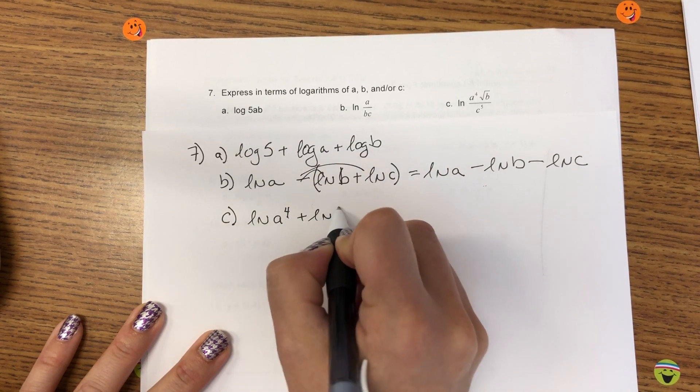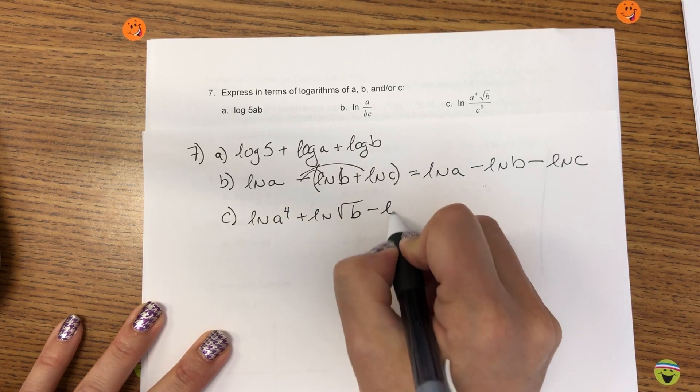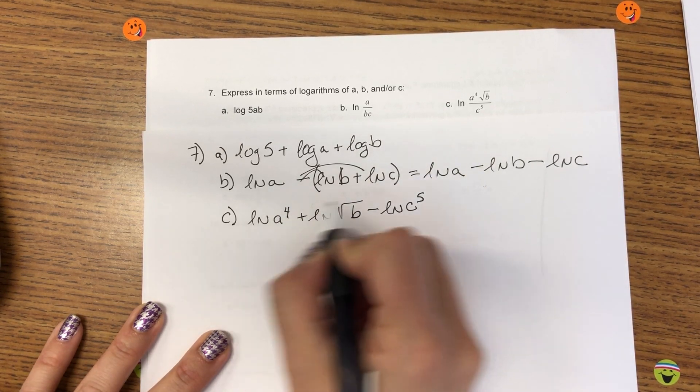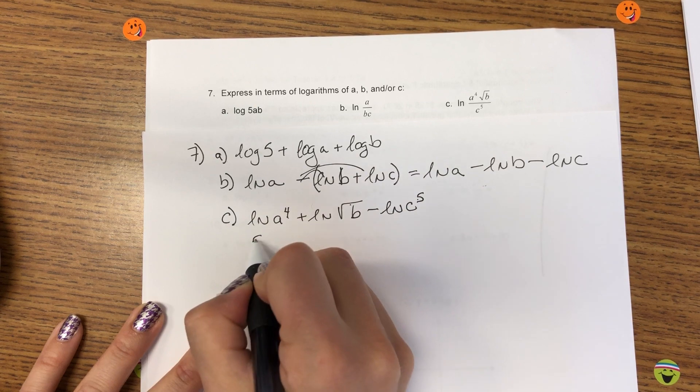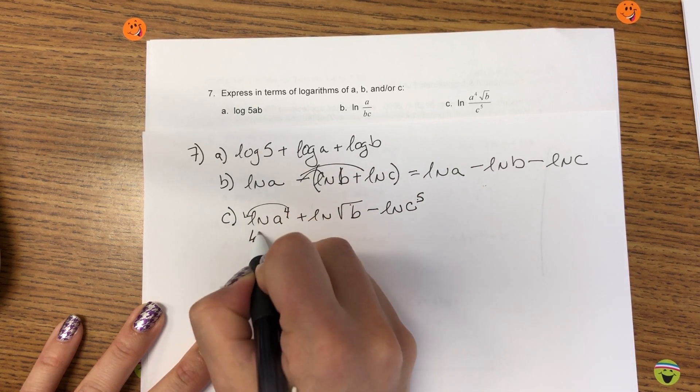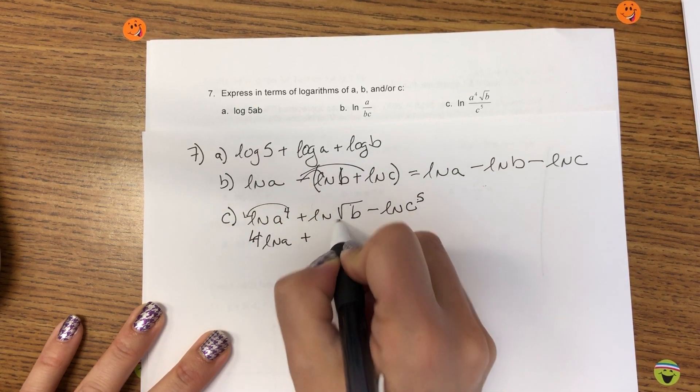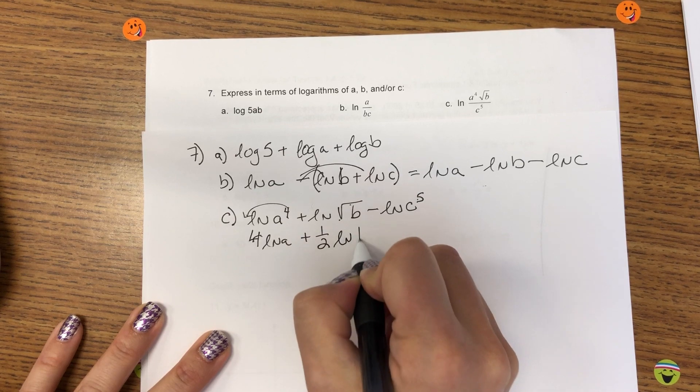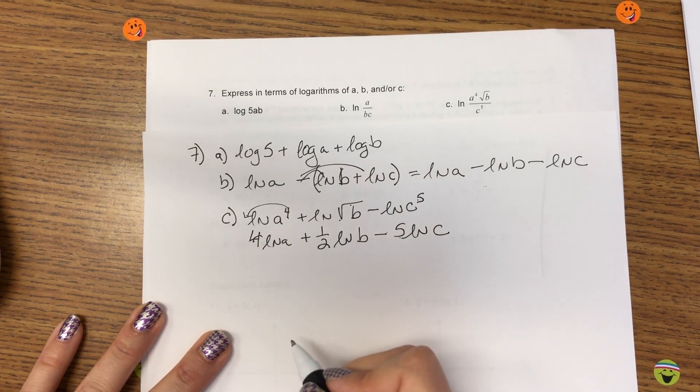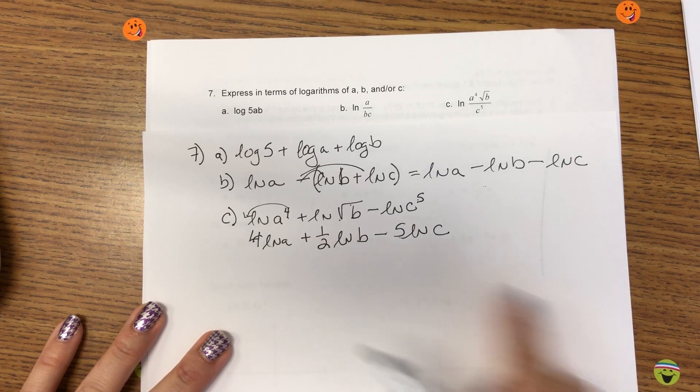And my final answer would be ln of A minus ln of B minus ln of C. So, I'm going to do the same process for C. But now, all these exponents come down to be the coefficient. The square root is an exponent of a half. And that's how I get the final answer for C.